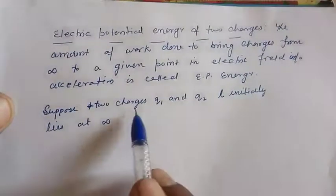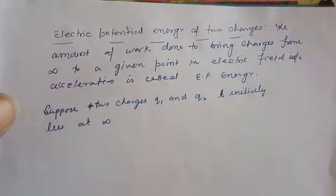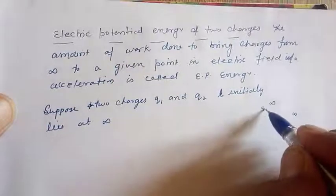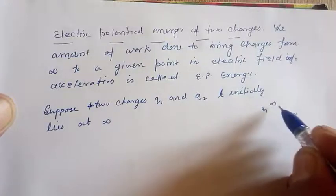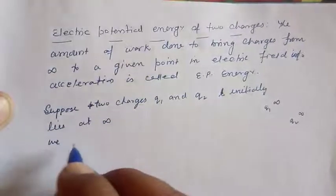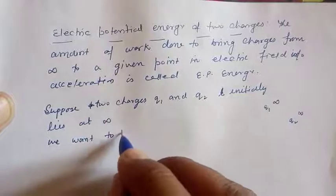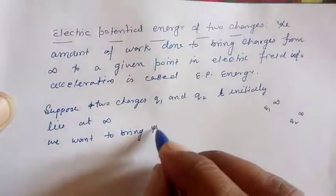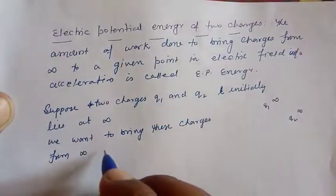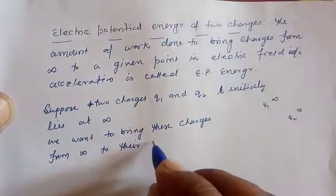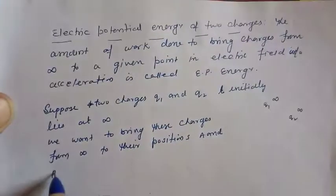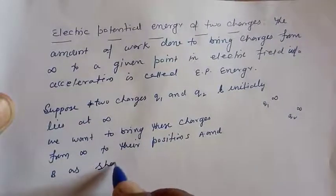Suppose we are having two charges q1 and q2 initially lying at infinity. We are having two charges q1 here and q2 here, both lying at a distance infinity. And we want to bring these charges from infinity to their positions a and b, as shown in figure.